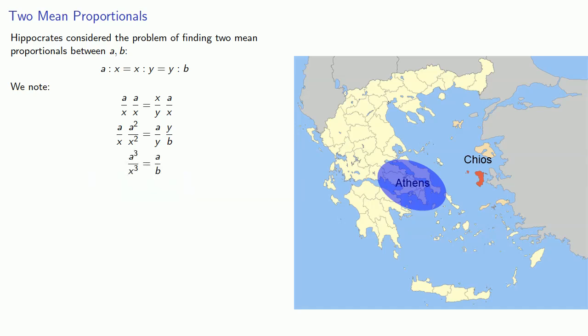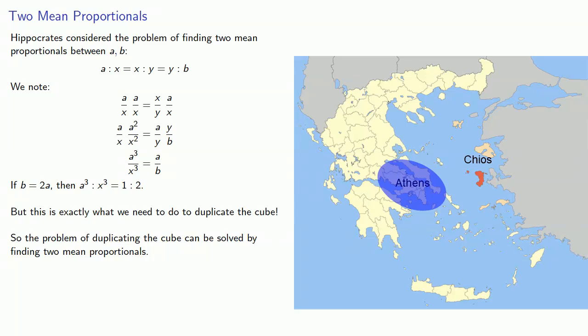And this is a very interesting and important result because if B is 2A, then A cubed is to X cubed as 1 is to 2. But this is exactly what we need to do in order to duplicate the cube. And what that means is the problem of duplicating the cube can be solved by finding two mean proportionals. And it's worth pointing out that Hippocrates did a very mathematician thing. He took one problem, duplicating the cube, and said it's the same as another problem, inserting two mean proportionals.